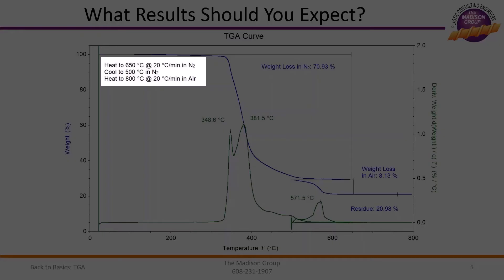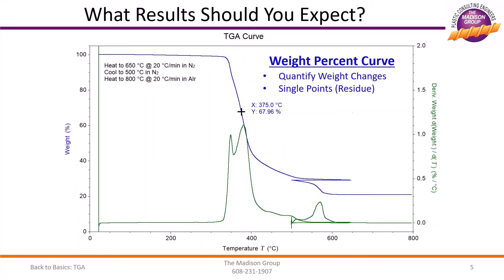The rate of heating in both the nitrogen and air atmospheres was performed at 20 degrees C per minute, which is a typical heating rate for TGA. A single point on the weight percent curve will tell you how much of the percentage of the sample weight remains on the pan at that given temperature. For instance, if we select the point at 375 degrees C, this specific sample has lost approximately 32 percent of its weight, with 67.96 percent of the sample remaining on the pan.